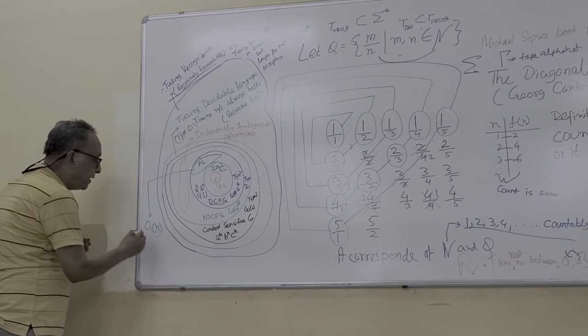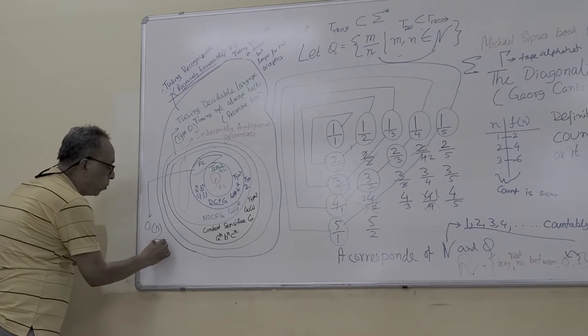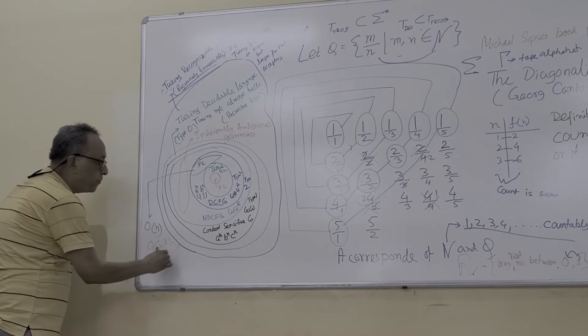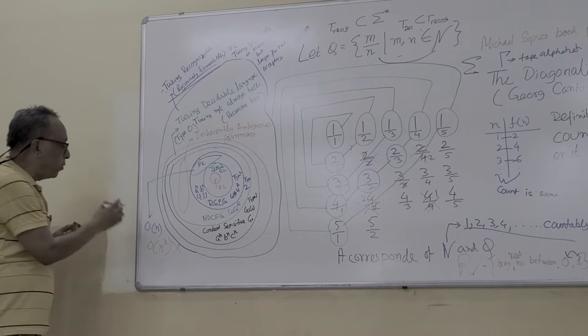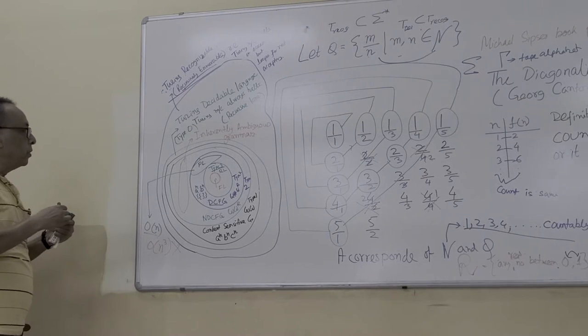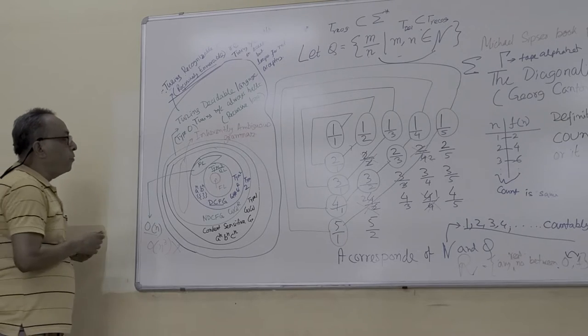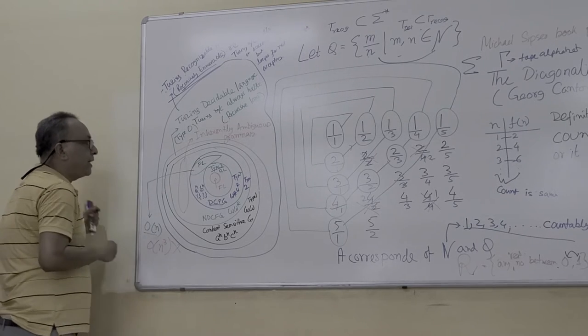Because n is the number of symbols. But O(n³) is not acceptable for parsing. We require O(n). So for this, we have to find out unambiguous grammar. You can definitely get it.